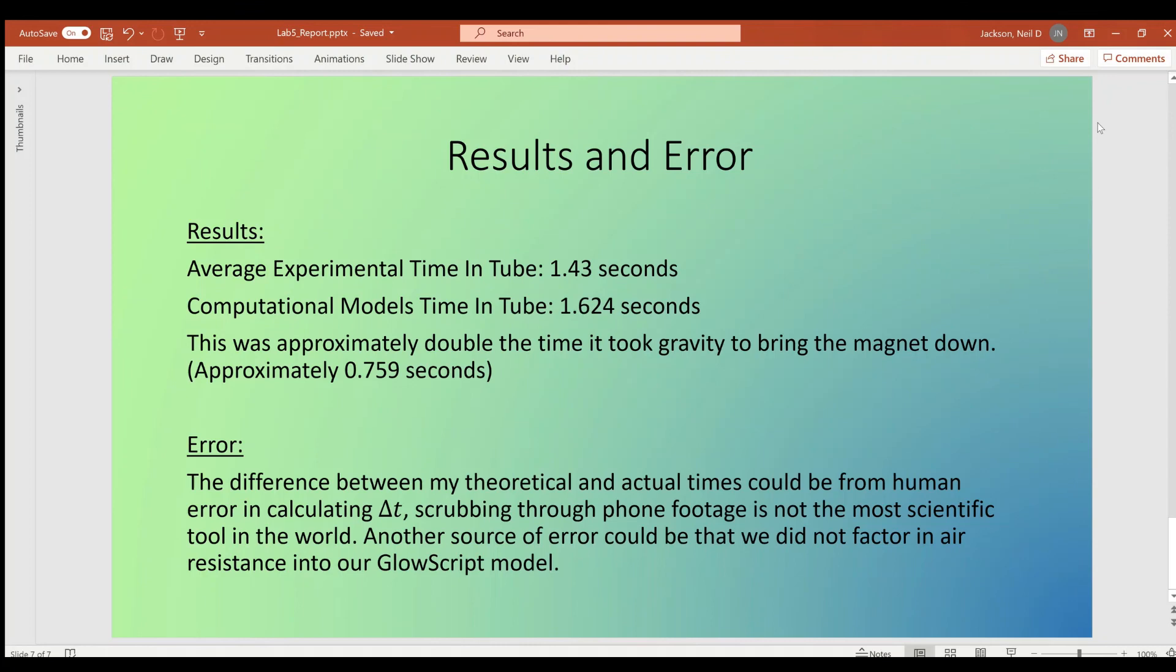The difference between the 1.43 and 1.624 could arise between some human error in calculating delta t, as scrubbing through phone footage is not exactly scientific. But the other more probable source of error is that we simply didn't factor in air resistance into the GlowScript model.